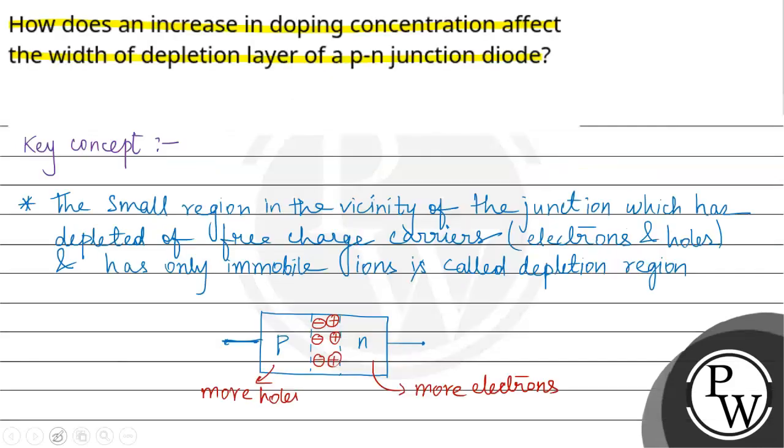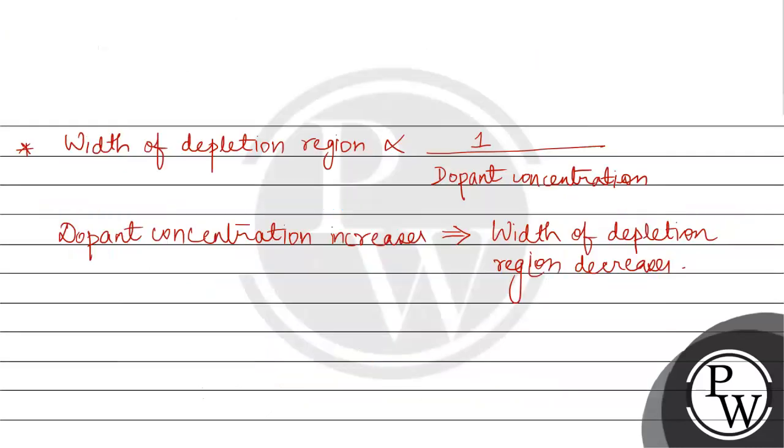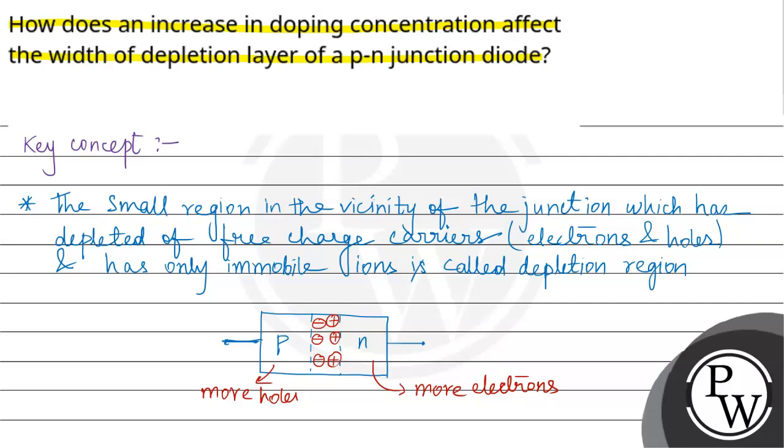So the answer is: how does an increase in dopant concentration affect the width of depletion region? If you increase the dopant concentration, the width of depletion region will decrease. This is the final answer. Hope you understand it well. All the best.